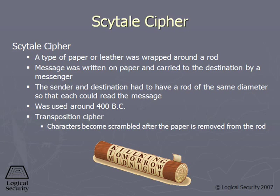Then there was this, what's called a Scytale, and what happened there is that they would have an actual stick or rod, and they would take a piece of paper and put it around the rod, and then write the message on the paper, and then take the paper off the rod — and that's the ciphertext, that's the encrypted message.